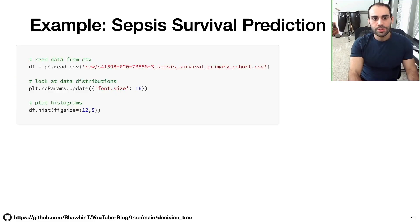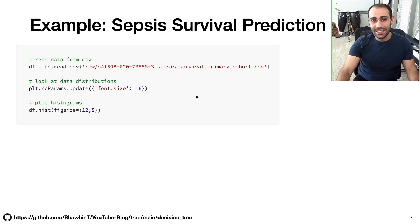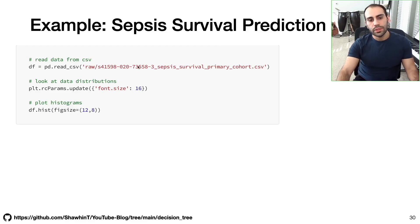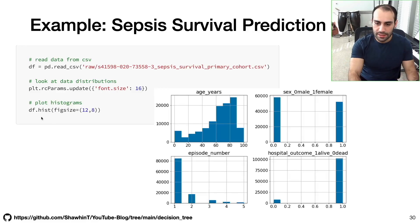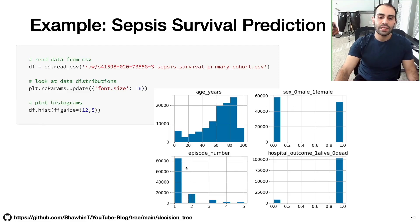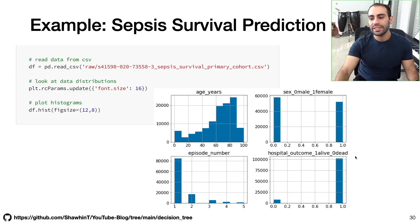With our libraries imported, we can read in our dataset — with Pandas, this is just one line of code. The CSV file is available at the GitHub repo, along with two additional CSV files for validating our decision tree. We can then plot histograms for every variable: the age of the patient, whether the patient is male or female, the number of sepsis episodes the patient has experienced, and the outcome variable — an indicator of whether the patient survived or died.